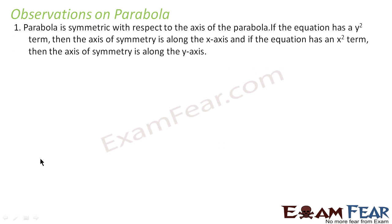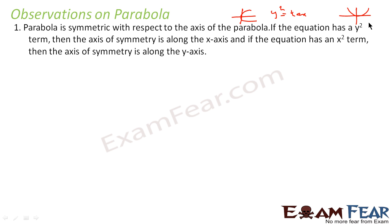Some observations on parabola. First, a parabola is symmetric with the x-axis if the equation has a y-square term. If the equation has an x-square term, it is symmetric along the y-axis. For example, y² = 4ax is symmetric along the x-axis, and x² = 4ay is symmetric along the y-axis.